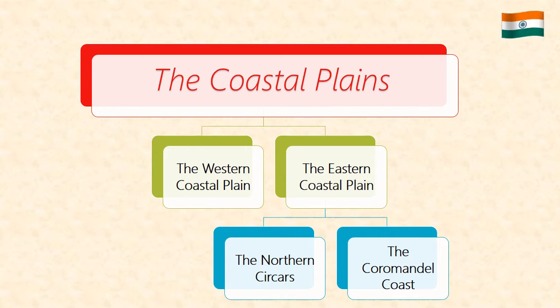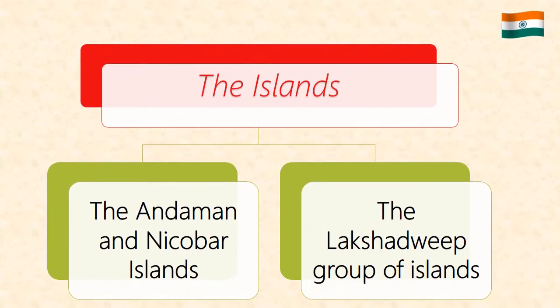The eastern coastal plains are divided into the northern circuits and the southern coast. Then the islands — we have two island groups: the Andaman-Nicobar Islands and the Lakshadweep group of islands.